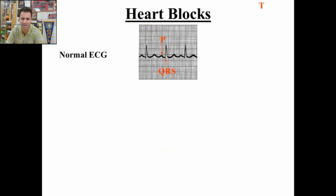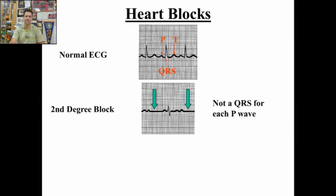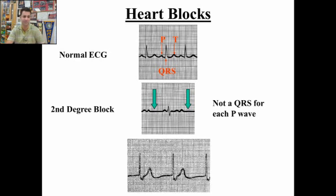Here's a normal EKG — the PQRST — that you see there, repeating over and over. In a second degree heart block, something is missing: you don't have a QRS for each P-wave. You have a P-wave, but there's no QRS — no ventricular depolarization. Second degree means from the AV node down through the Purkinje fibers, there's some blockage and it's not transmitting properly.